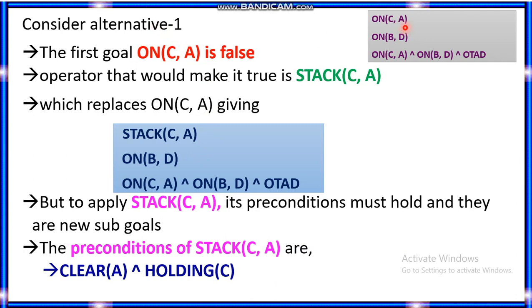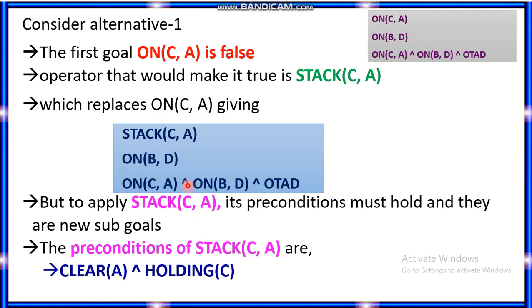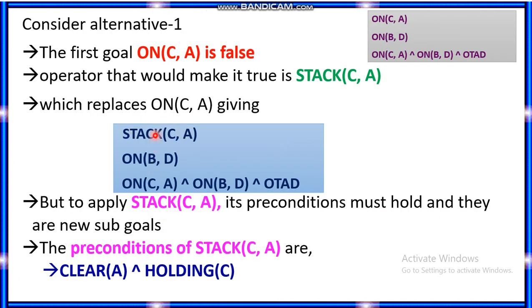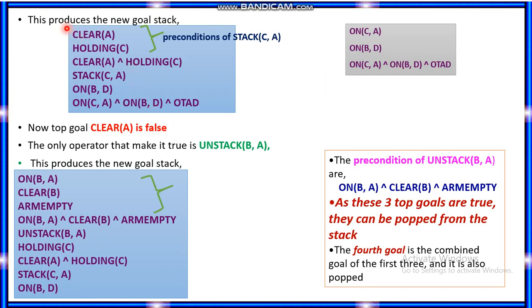Taking alternative one: on(C, A) and on(B, D). The first goal, on(C, A), is false. To make on(C, A) true, we apply the stack(C, A) operator, whose precondition list requires clear(A) and holding(C). So stack(C, A) is replaced with its preconditions: clear(A) and holding(C). Now the top of the stack is clear(A), which is currently false because block B is on A. To make clear(A) true, we must apply unstack(B, A).